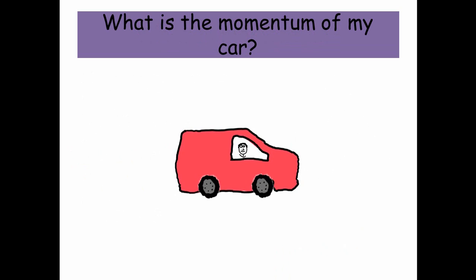So what's the momentum of my car here? Well, my car's got a mass of 5,000 kilograms and it's traveling at a speed of 20 meters per second. So to find the momentum, that's dead easy. Just do the mass times velocity. So 5,000 times 20 and you get 100,000 kilogram meters per second.